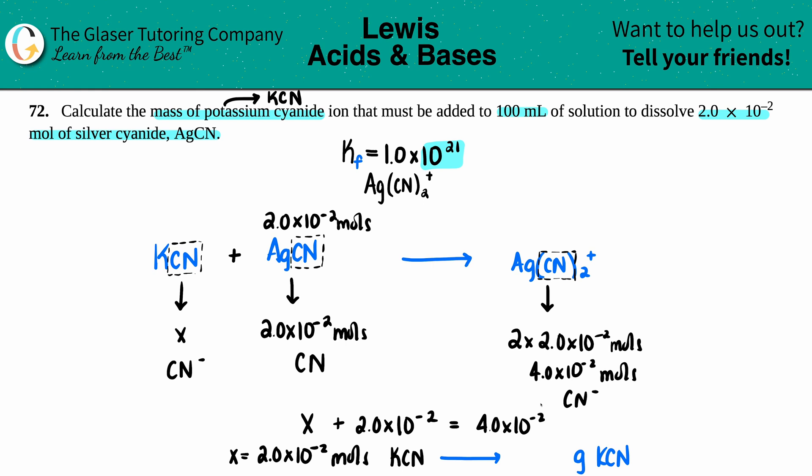Let's see, calculator's out. KCN: potassium is 39.1 plus carbon plus nitrogen. I'm just going to multiply by the molar mass, which is 65.12, times 2.0 times 10 to the negative second. I get roughly 1.3 grams. So 1.3 grams of KCN is what we need. That's the final answer.